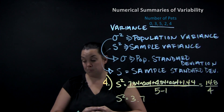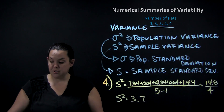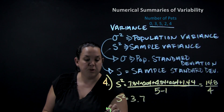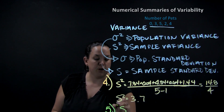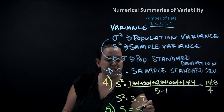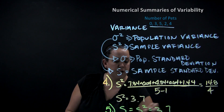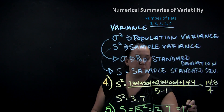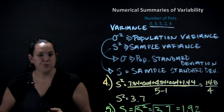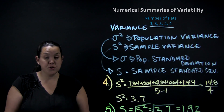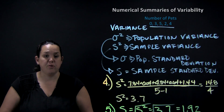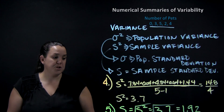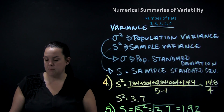To get s — sample standard deviation, which is the average distance from the mean — all I have to do is take the square root of s squared. Since s squared is 3.7, taking the square root gives us 1.92. So there are two measures of variability — variance and standard deviation — and this is how you calculate them from the mean.